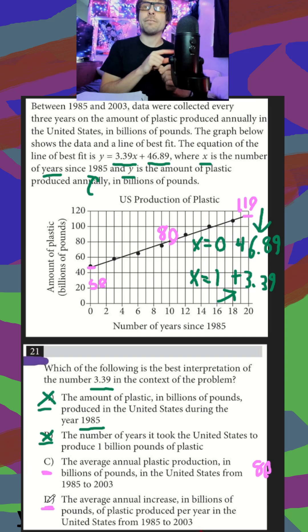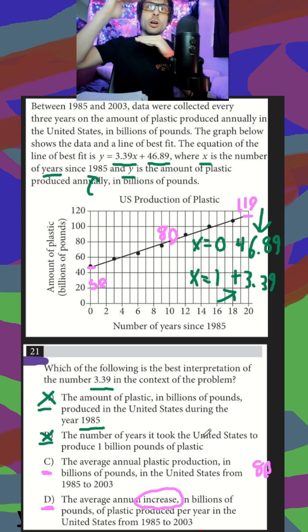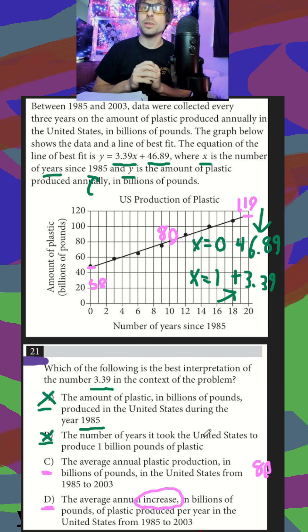It becomes much easier when we contrast it with a different answer. Our slope isn't the average per year produced. Our slope is the average increase per year. So each one year that passes, we increase our production of plastic by 3.39. D is going to be our answer for the average increase, not just the overall average.